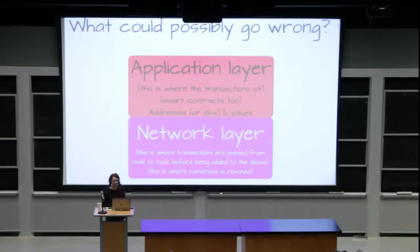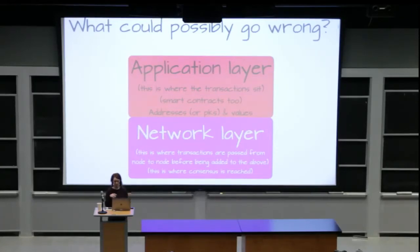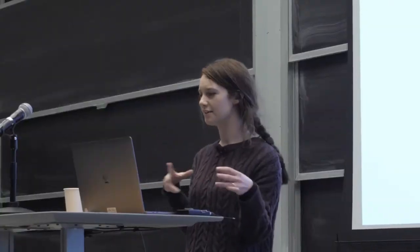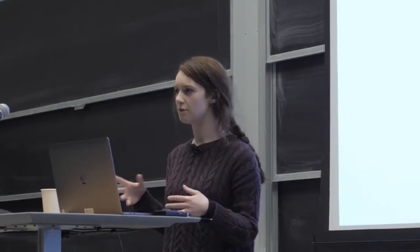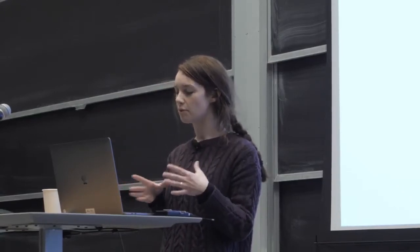First of all, this is kind of the layer zero and layer one of blockchains. On layer zero we have the network layer — this is where transactions get broadcast to the nodes and they reach consensus on which transactions to include. There is a privacy leak at this layer to do with IP addresses and MAC addresses and where transactions come from. If you have network sniffers you might be able to identify relationships between people and their IP addresses, making meaningful privacy leaks. But this talk is not going to be about that.